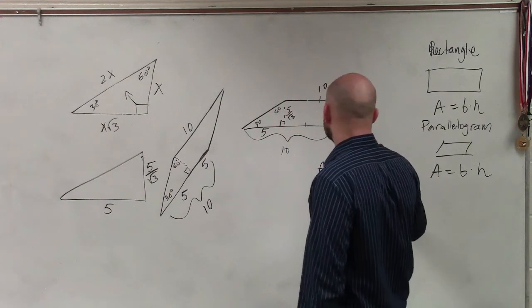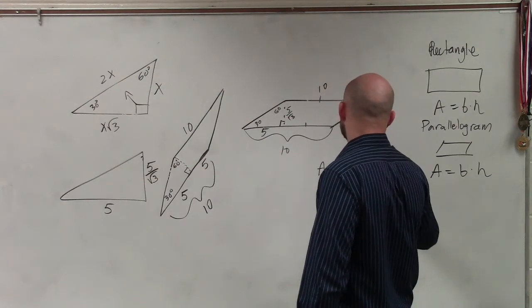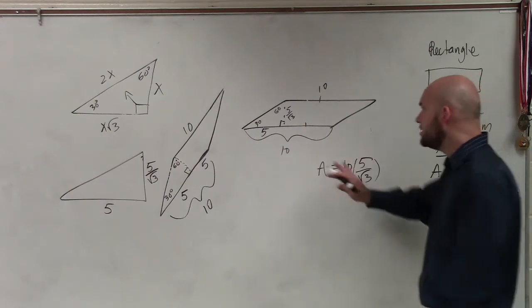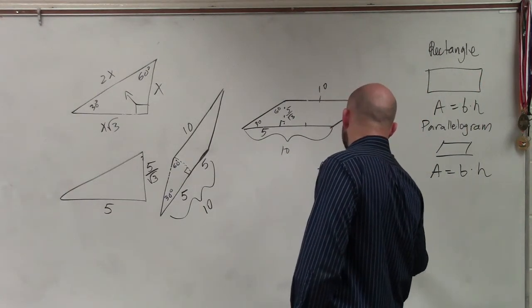So, to find the area, it's going to be your base times your height. 5 divided by the square root of 3. Now, this is a whole number times a fraction. You just multiply across. So, it's 50 divided by the square root of 3.